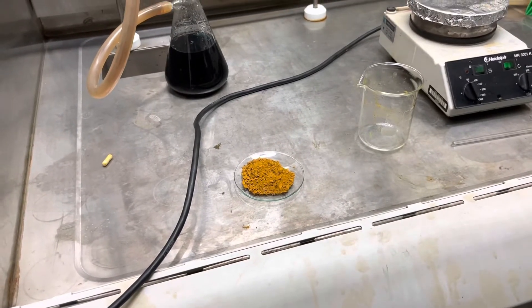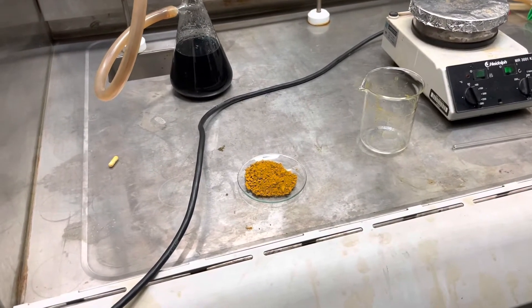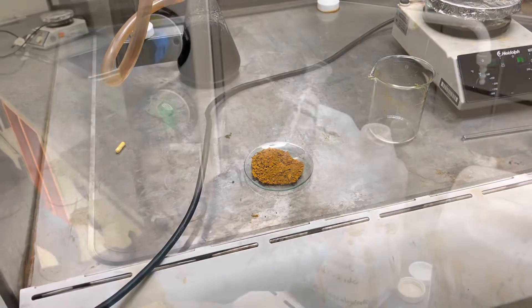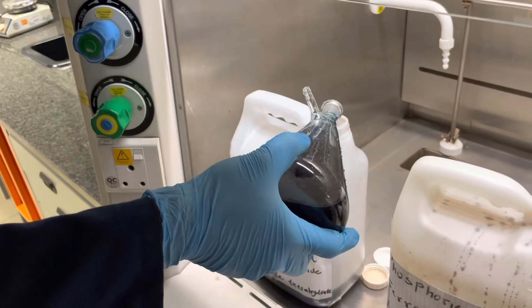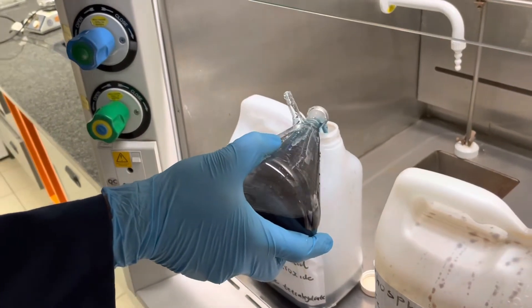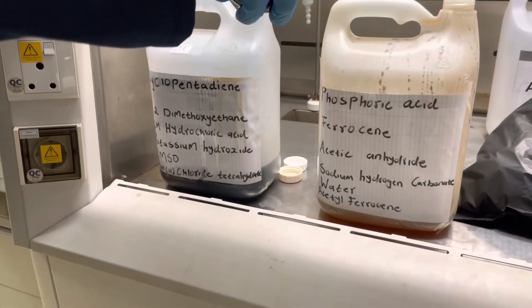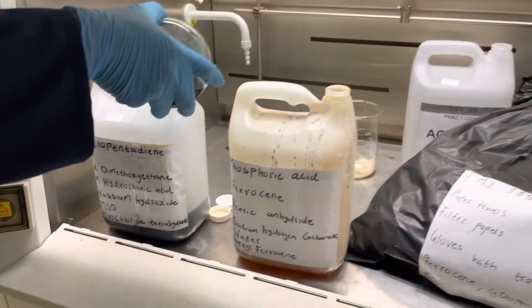Of course, there is our crude ferrocene product. After it has dried, you will remember to weigh it for your yield calculations. As always, please remember to discard your waste in the appropriate waste container for this practical. They will be marked as always at the back of your laboratory somewhere. There is also one for your gloves and your paper towels.